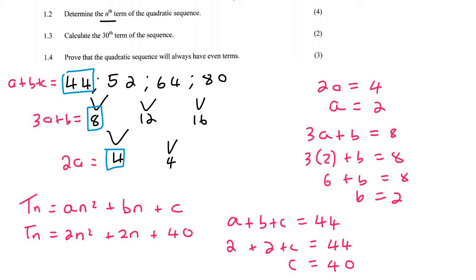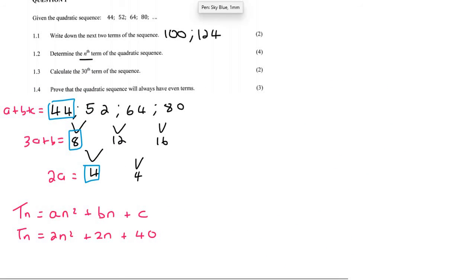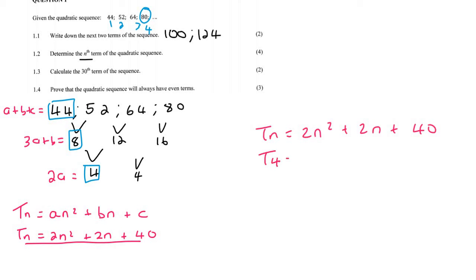But now we need to double check to make sure that we haven't made any small mistakes. So the way we check is, what I like to do is I take the last number. I know that that is position number 1, 2, 3, and 4. So I take this formula that we've just found, and I plug in position 4. So I say 4 and 4, and then I go work this out on my calculator, and I get exactly 80.